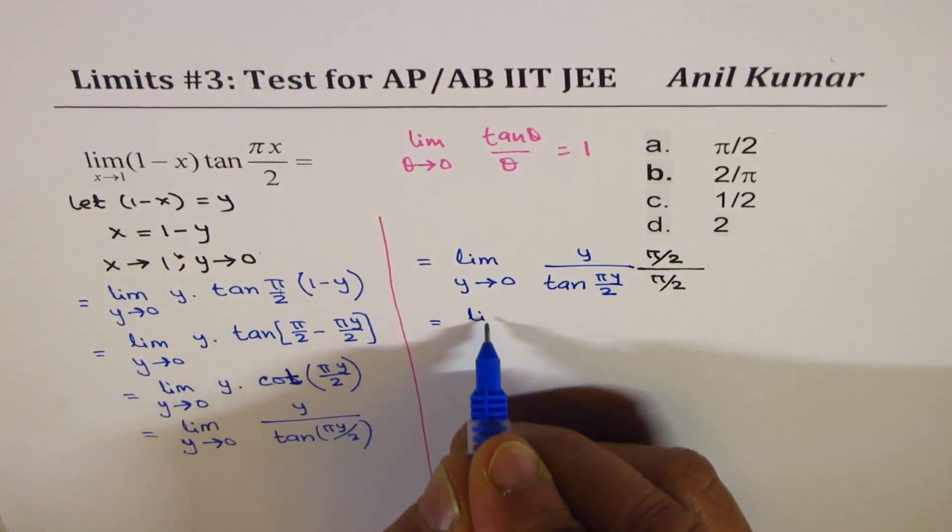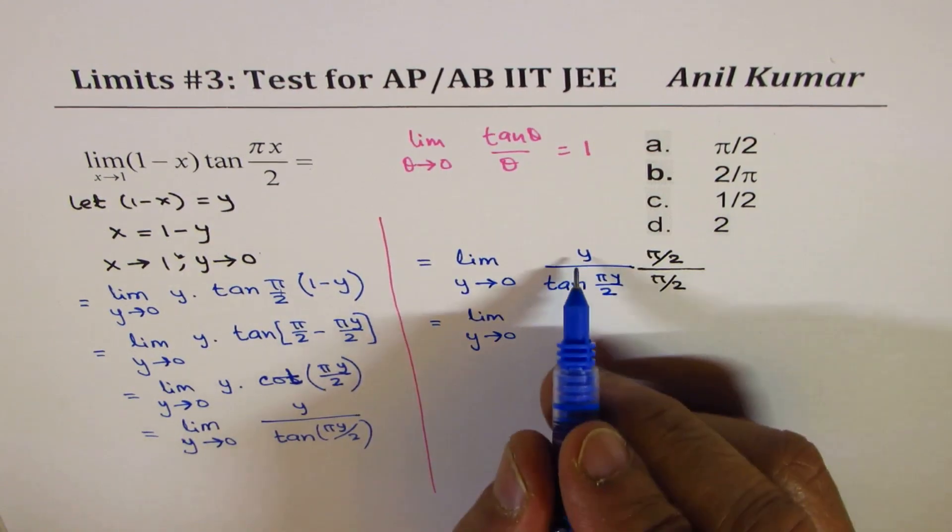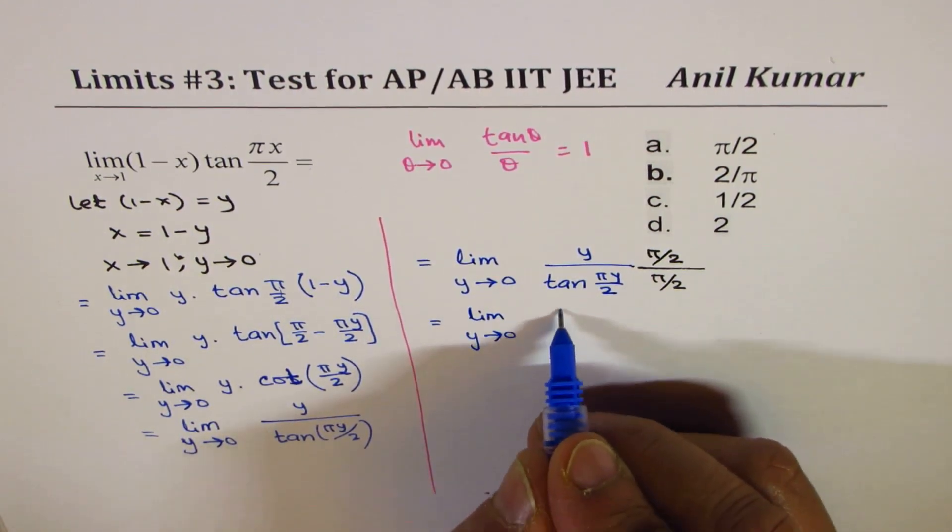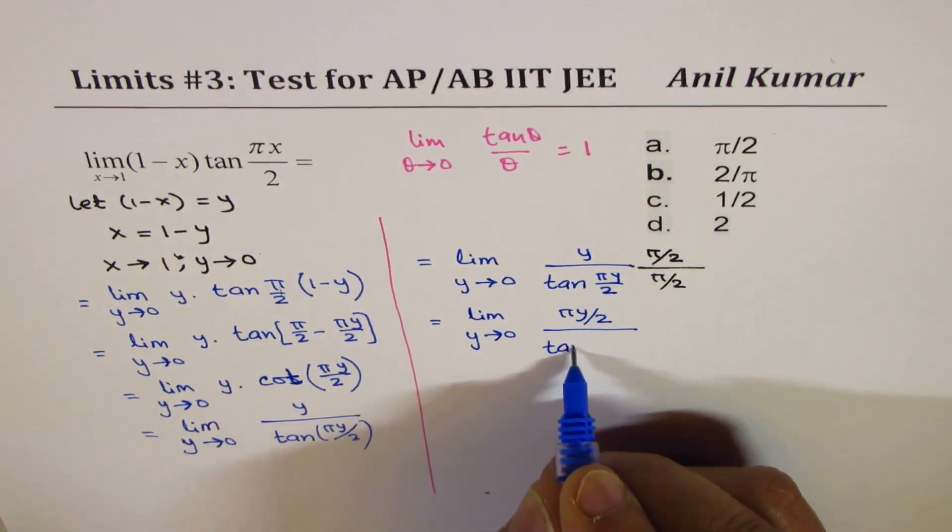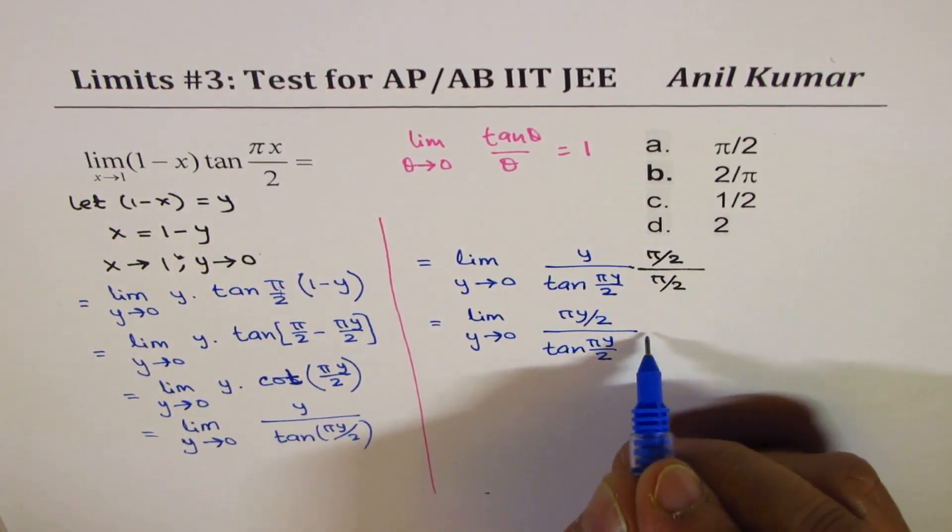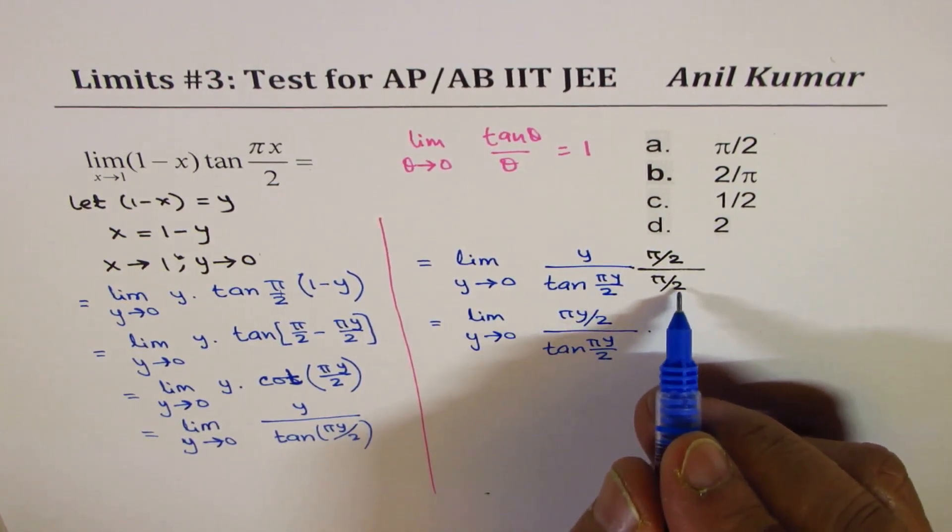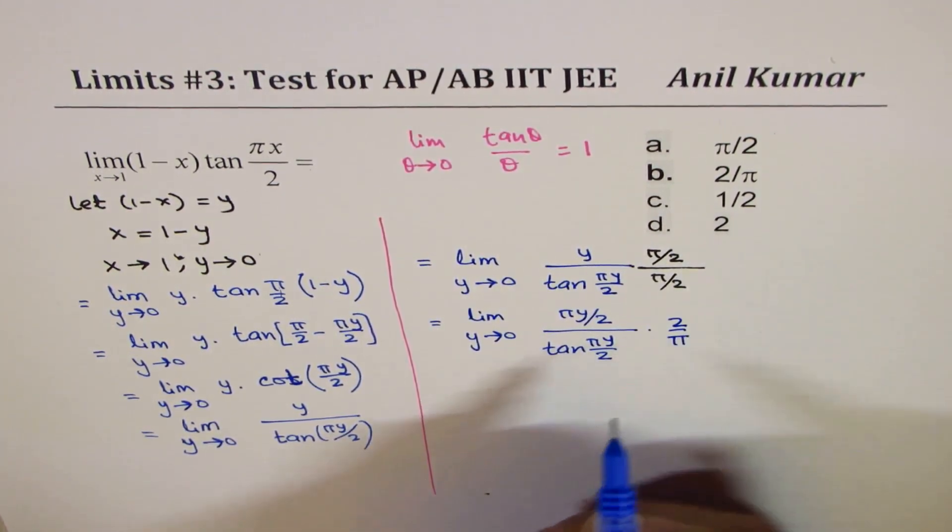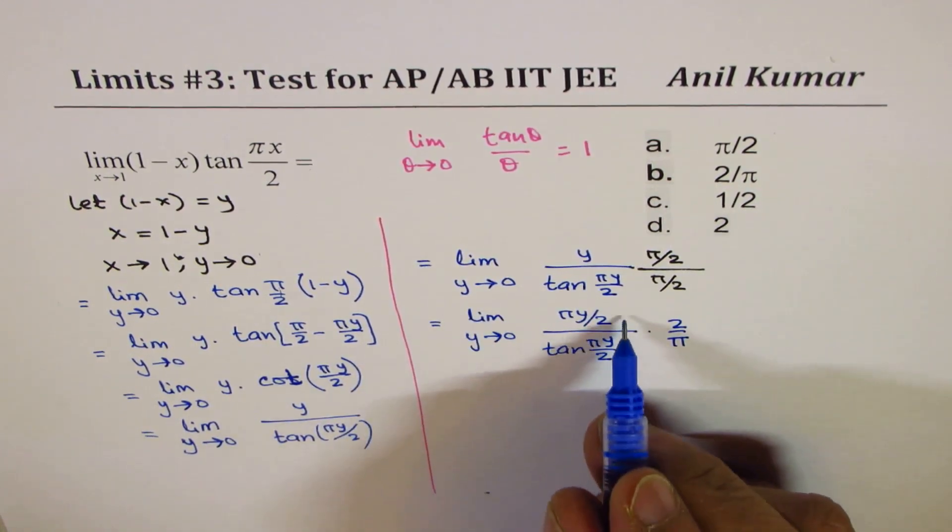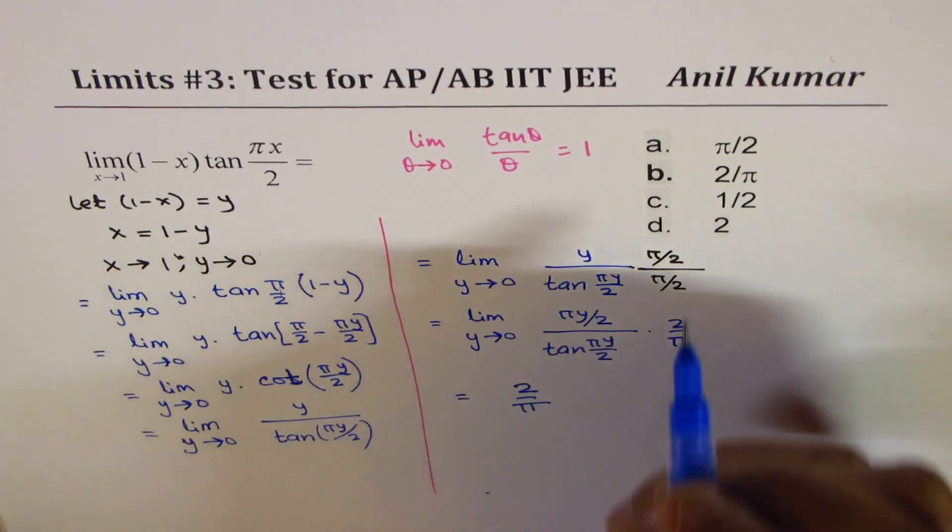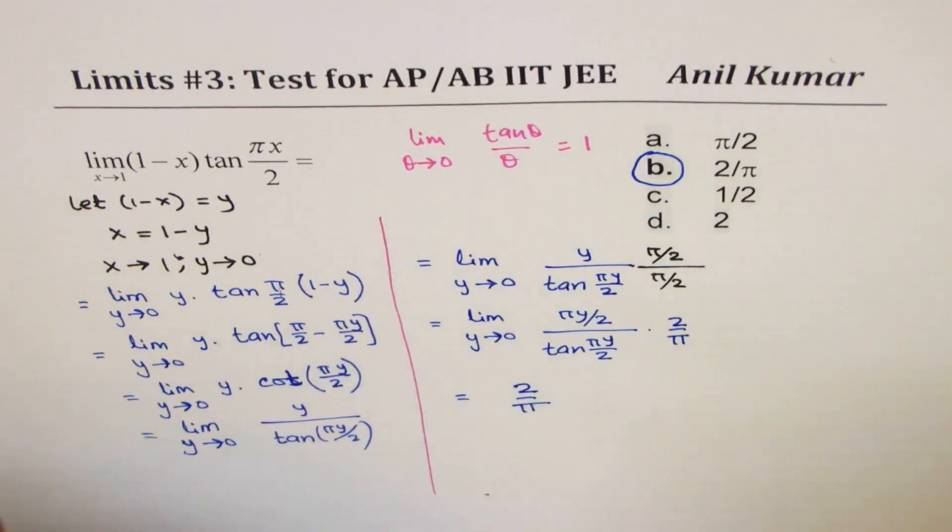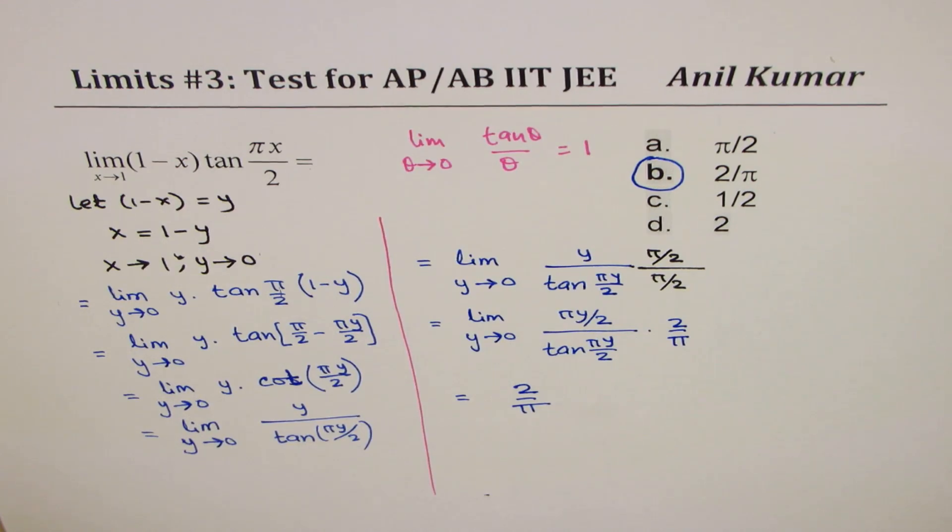I get limit y approaches 0, and the numerator I get pi y by 2 over tan pi y by 2, and here divide by pi by 2 means 2 over pi. Now this limit is 1, so we get our answer as 2 over pi, which is option b. That is how you could find the limit of this function. It matches with b which is 2 over pi.